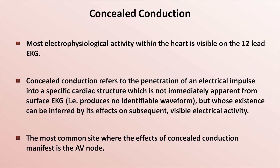For example, when a proximal atrial impulse traveling antegrade reaches the AV node but does not continue distally to result in ventricular depolarization due to the His-Purkinje system still being within the refractory period. There are dozens, perhaps hundreds of different ways in which concealed conduction can manifest on the EKG. I'll show just two examples to demonstrate the variety — first a relatively common and straightforward one, and then a rarer, substantially more complicated one.